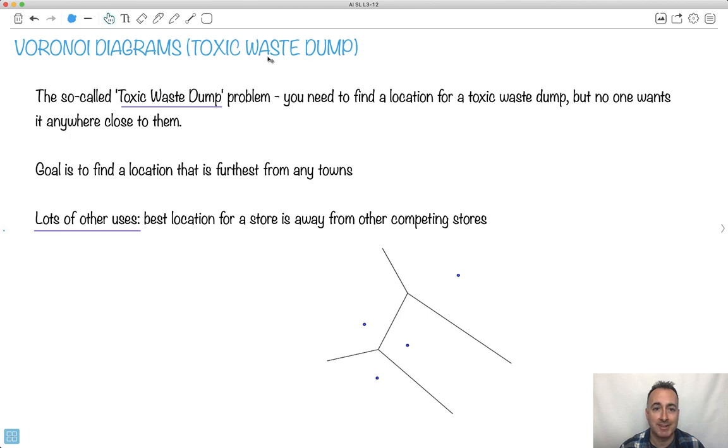We're going to talk about the toxic waste dump problem, which I think is a horrible name, but I guess it does describe it. So this problem is something like, let's assume you're some city planner or some sort of governmental person and you're supposed to try to find out where you want to put some toxic waste somewhere. No one wants it anywhere close to them. Everyone seems to agree, yeah, we should put it somewhere, but no one wants it close to them.